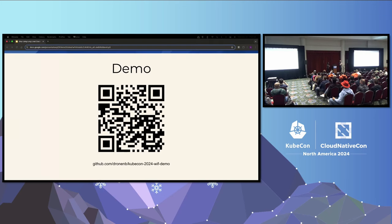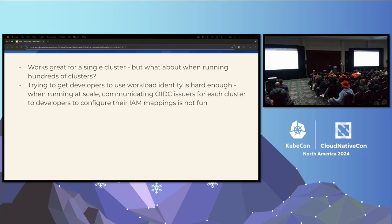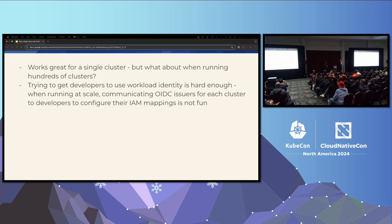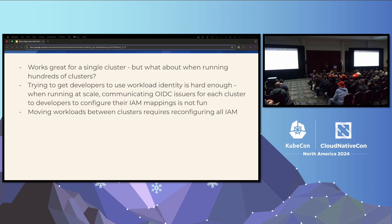This works great for a single cluster. But what if you're managing hundreds or thousands of clusters? It's tedious to configure OIDC issuers for every cluster. Getting developers to use workload identity is hard enough — communicating separate issuer configurations per cluster is a pain. Moving workloads between clusters also requires reconfiguring all your IAM. Wouldn't it be nice to federate with a single issuer? I'll pass it back to Anjali, who'll talk about something that can help with that situation.